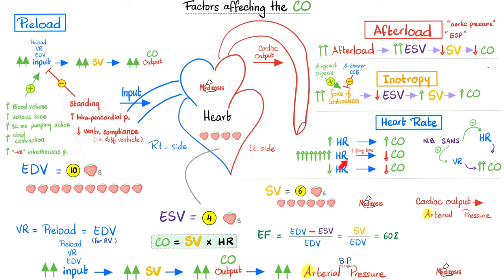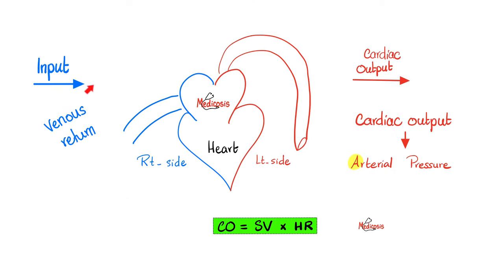It makes sense that when you're sleeping, low heart rate means low stroke volume and low cardiac output. To summarize: input is venous, output is arterial; preload is venous, afterload is arterial.